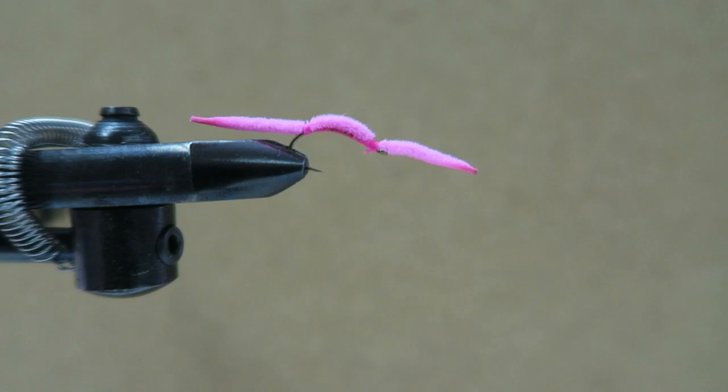Welcome back everyone. Today I'm going to show you how to tie a San Juan Worm. What I'll be using is a size 10 scud hook, some pink Ultra Chenille, and some pink thread. And I'll show you how it's done.